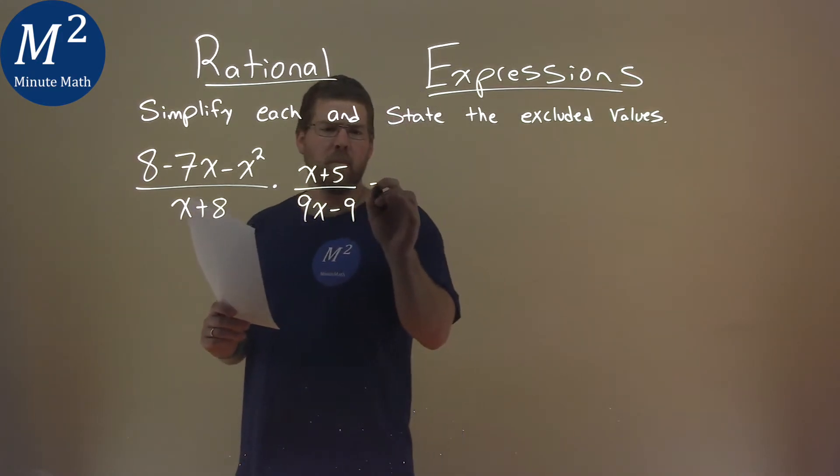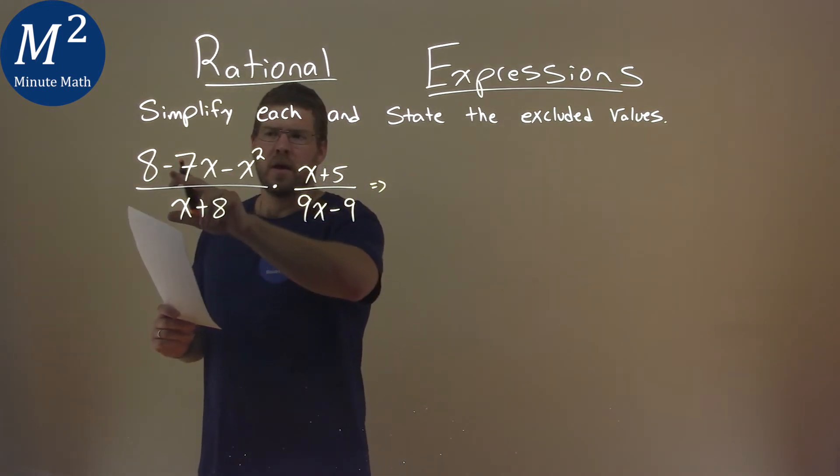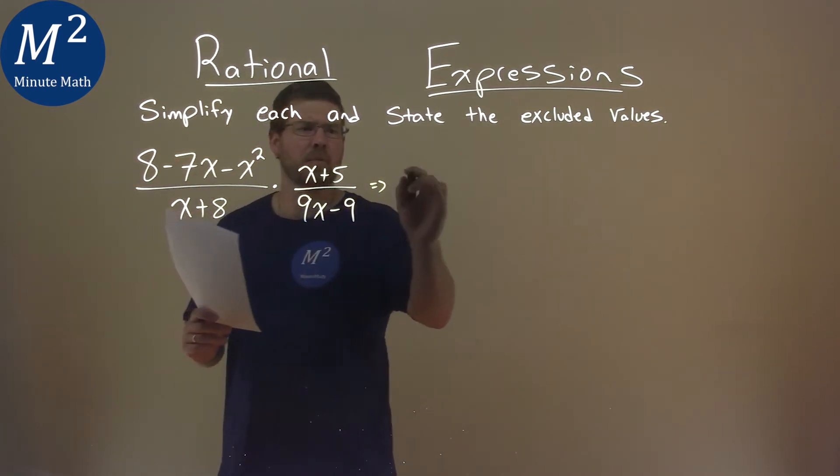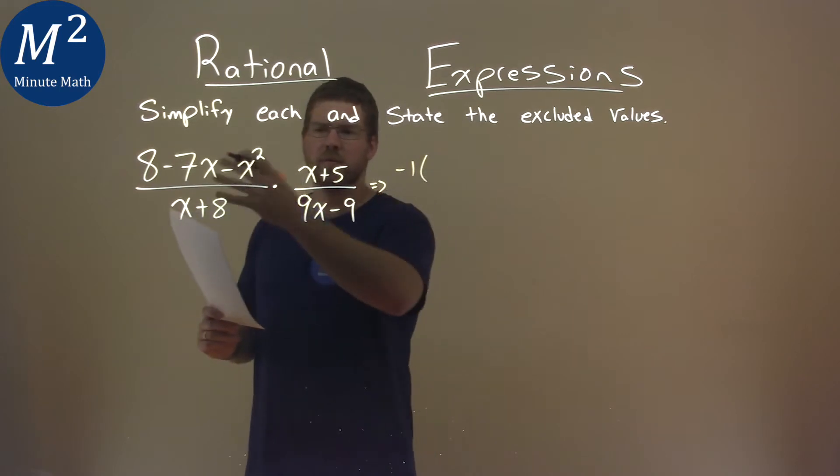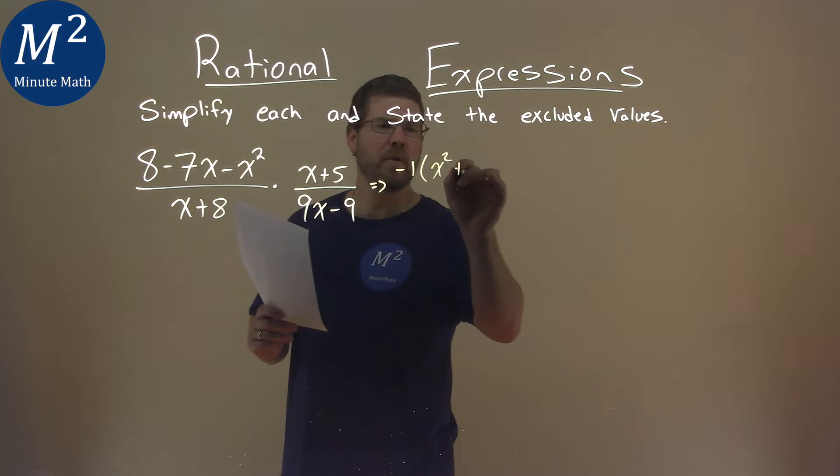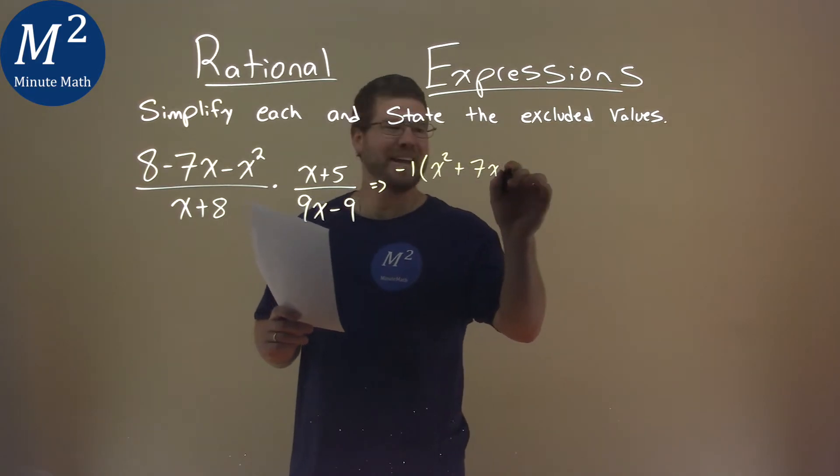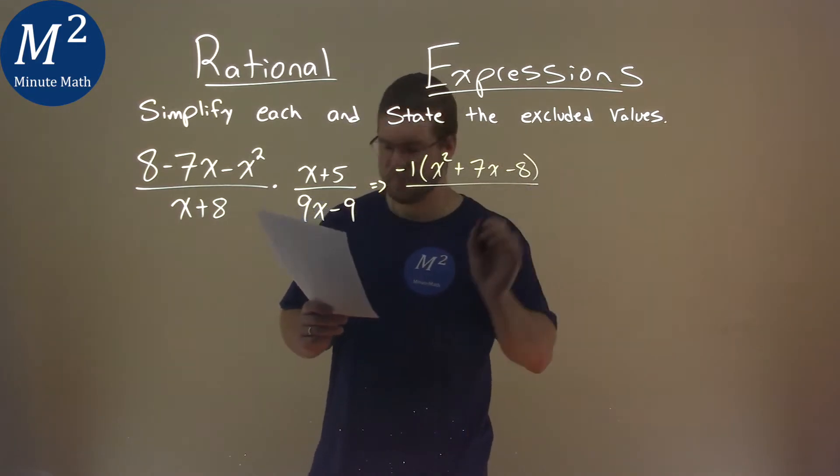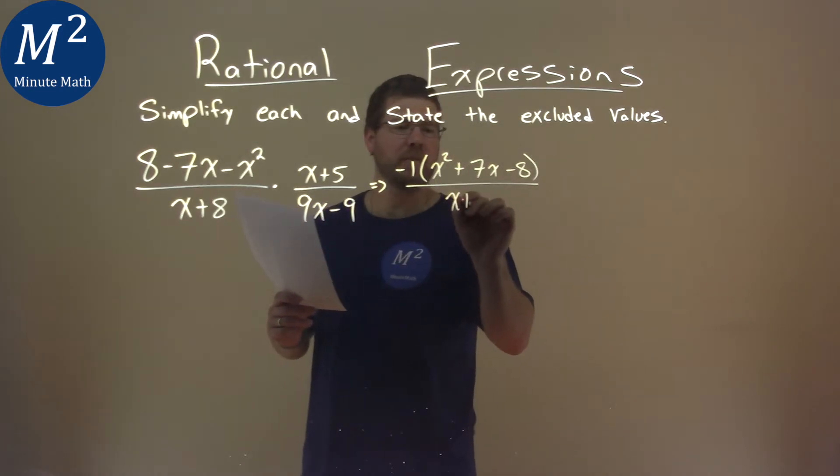Let's go simplify this first. This numerator right here, I'm going to pull out a negative 1 and flip things around. So we pull out a negative 1, we have a positive x squared, a positive 7x, and a negative 8. The denominator stays the same, x plus 8.